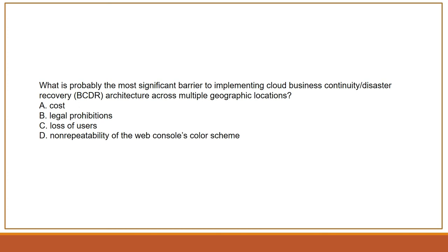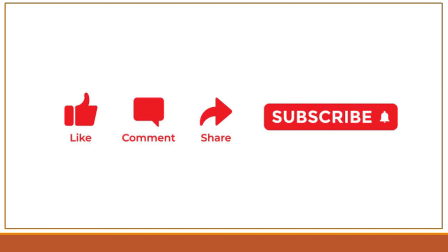Final question: What is the most significant barrier to implementing cloud BCDR architecture across multiple geographic locations? The options are cost, legal provisions, loss of users, and non-repudiation. Non-repudiation and loss of users should not be the barrier — cost remains the most important aspect, because replicating cloud assets across multiple geographic regions is typically more expensive. That concludes domain six. Please subscribe, like, comment, and share — thank you.